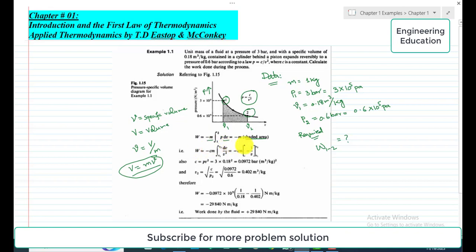So we arrange this expression according to our requirement. We have the given law P is equal to C by V square. So P is replaced with C by V square. When we put C by V square in place of P, it becomes: C is constant, it will come out. Minus CM integral small v1 to small v2, 1 over v square into dv, or dv by v square. These are specific volumes.